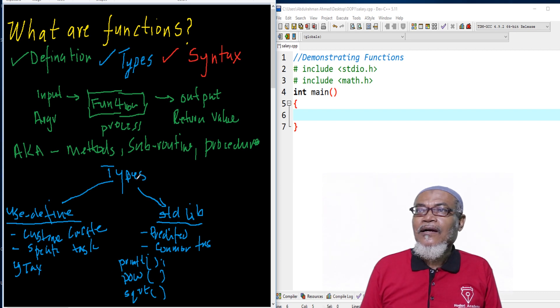It's very important to understand what you call the types of a function. Basically, functions are within two types, the user-defined and the standard library function. The third part of it, we want to see the syntax.